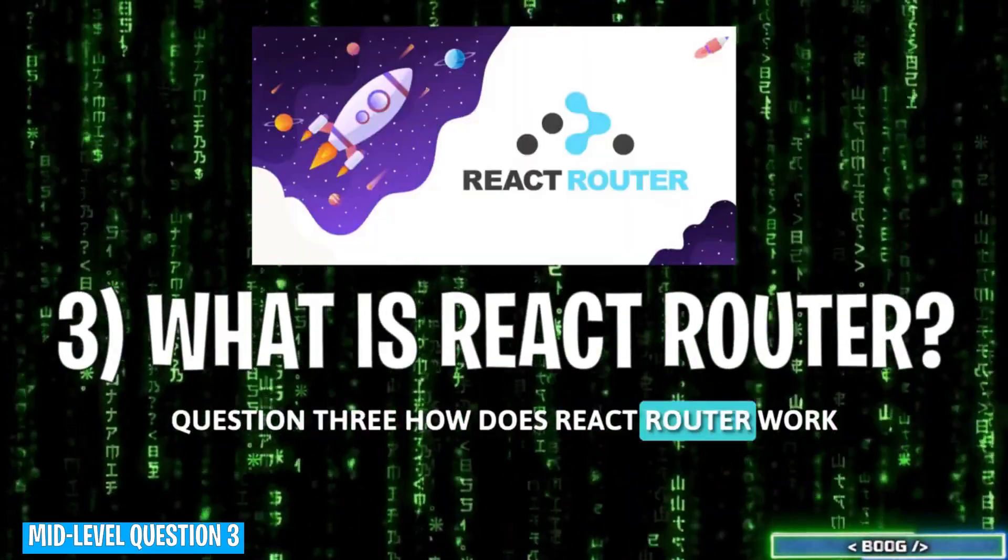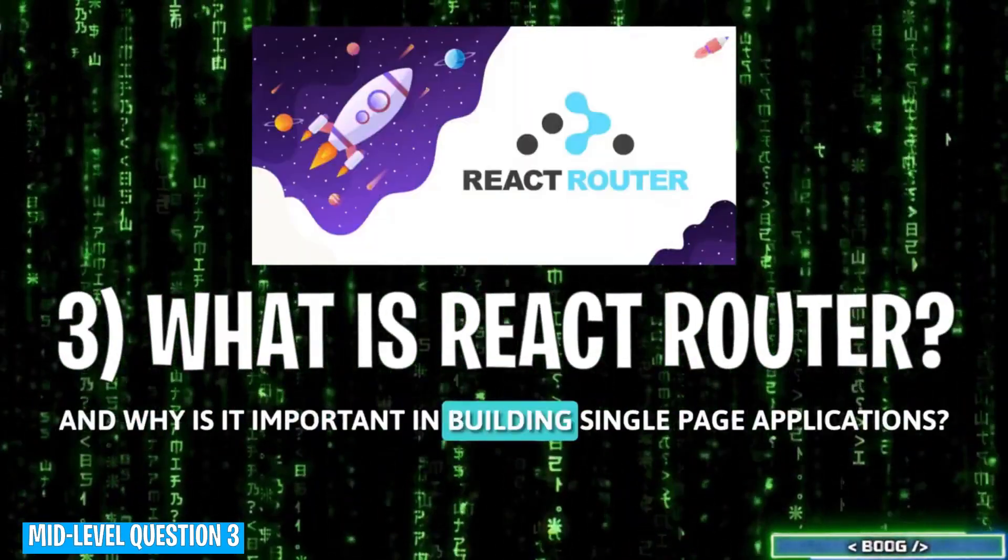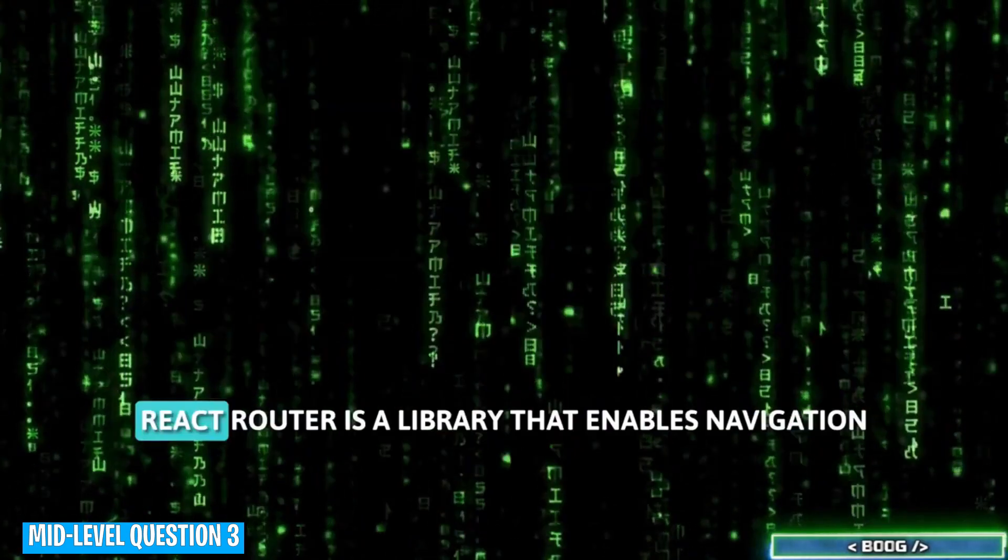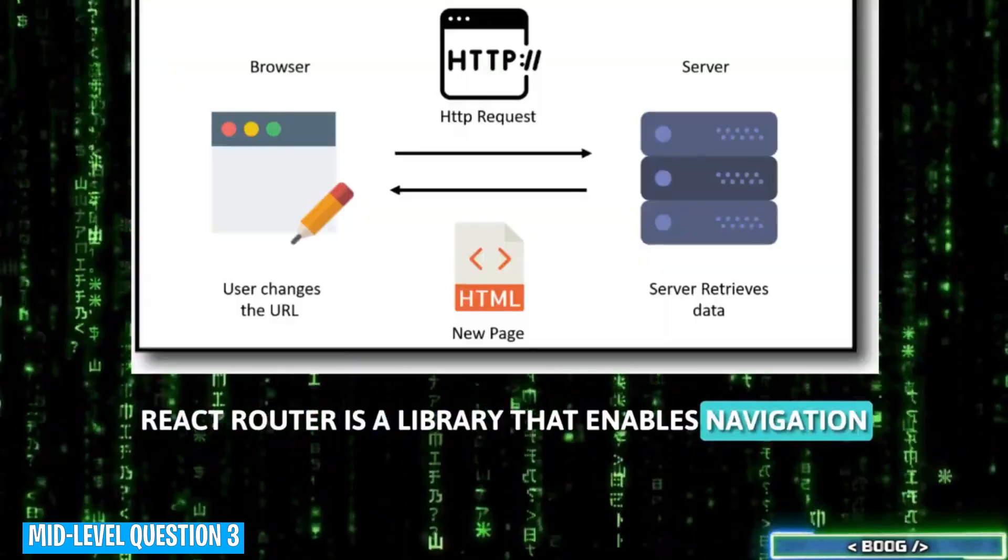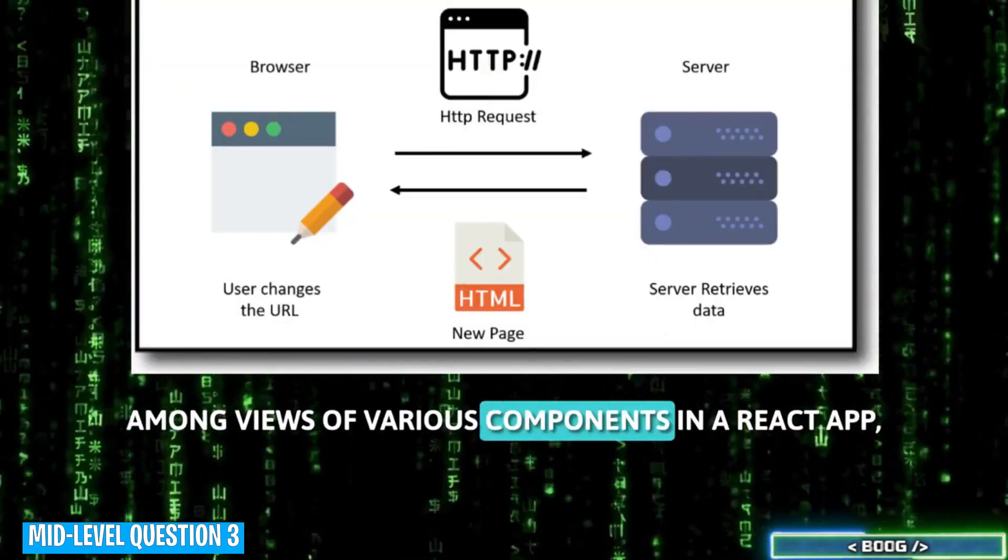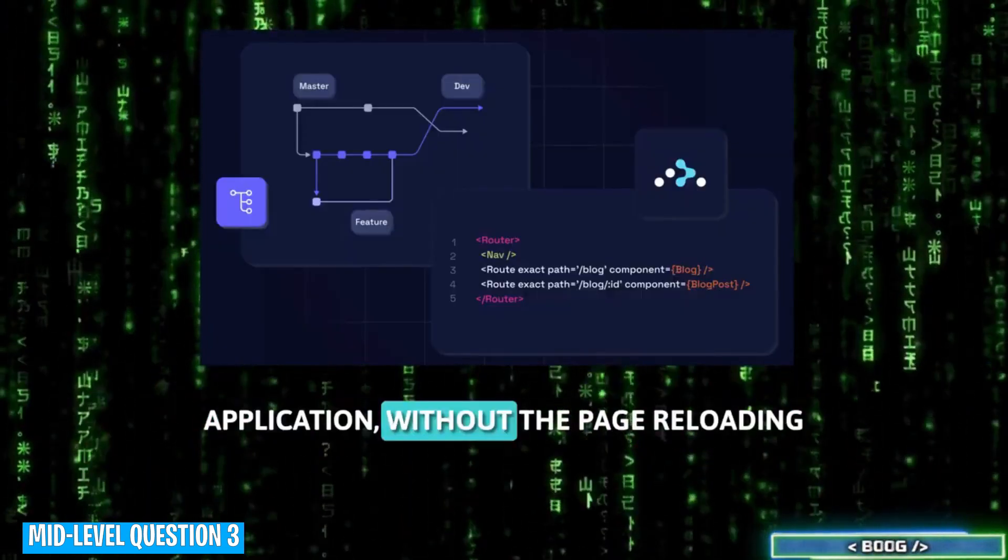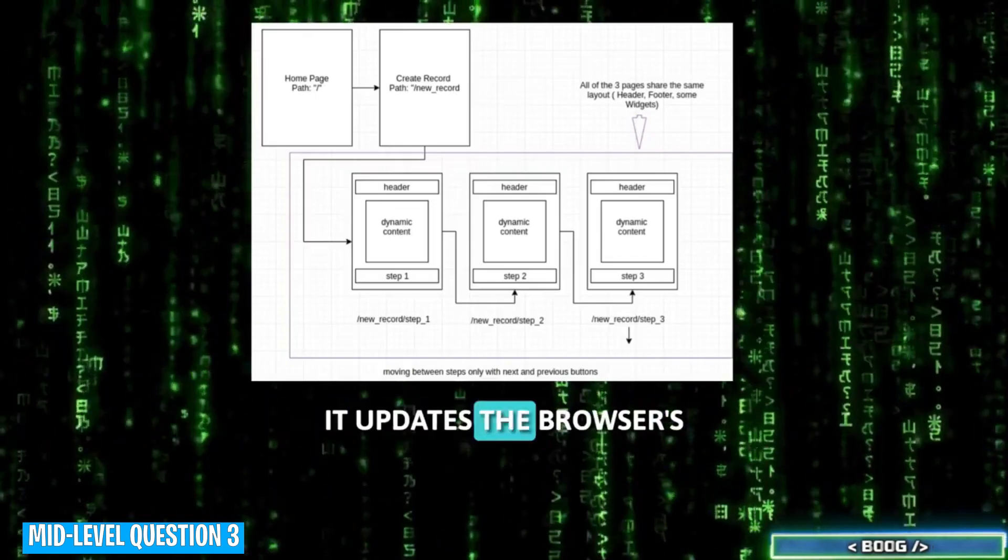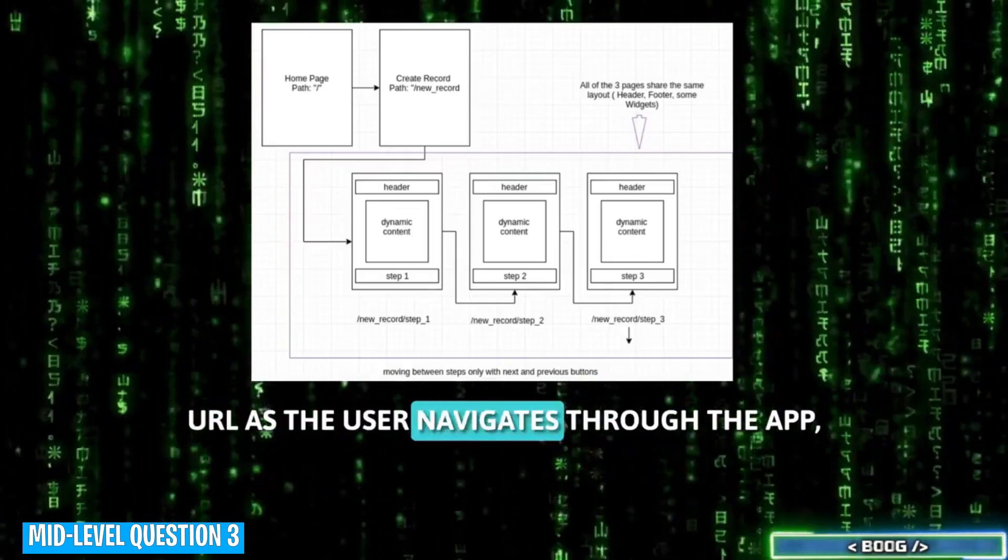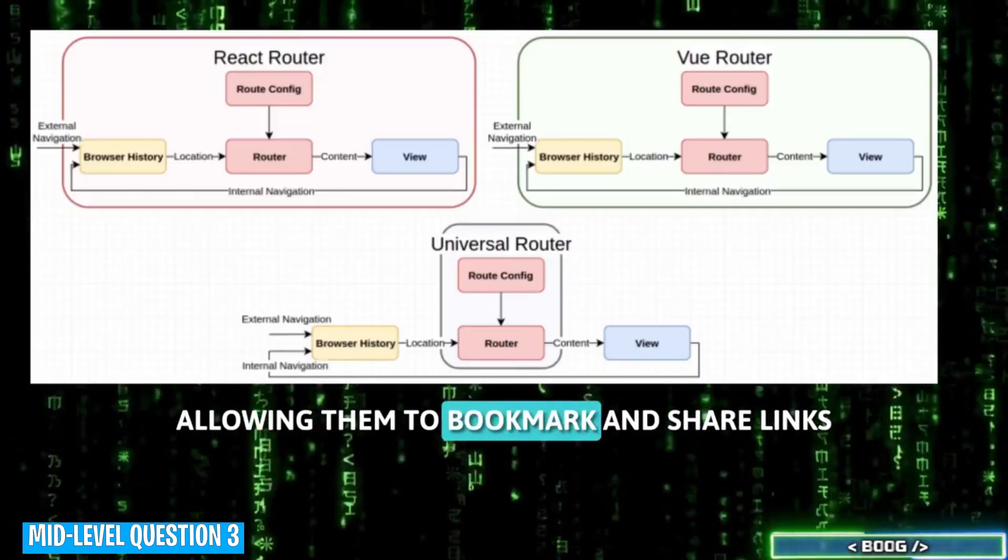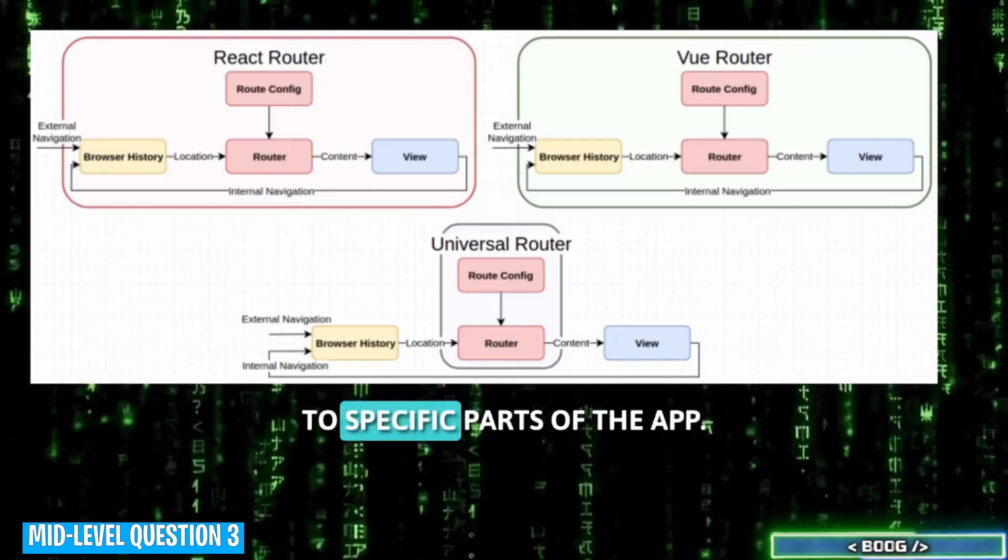Question 3. How does React Router work and why is it important in building single page applications? React Router is a library that enables navigation among views of various components in a React app, making it behave more like a multi-page application without the page reloading. It updates the browser's URL as the user navigates through the app, allowing them to bookmark and share links to specific parts of the app.